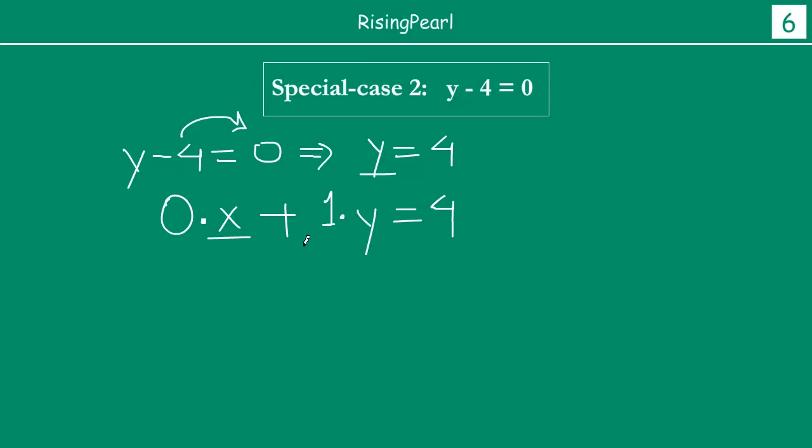Now you have a linear equation available. So dosto, now, chalo, let us find out some values, some solutions to this linear equation. Let us take x equal to, maan lijiye, 2. If x's value is 2, dosto, so y, how much is y? So this is 0 times 2 plus 1 times y is equal to 4. This basically gives us, 0 times 2 is 0, so y is equal to 4.